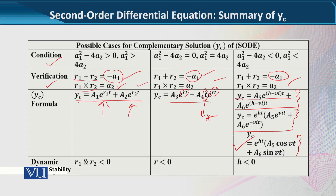Trigonometric form ہم نے اس لئے استعمال کیا تھا کیونکہ cosine اور sine zero اور one کے ساتھ مختصر values دے کر solution کو simplify کر دیتے ہیں. Dynamic stability کی بات ہے — یہاں صرف ان کا introduction ہے لیکن ہم آنے والی videos میں ان کو سمجھیں گے بھی. Distinct real roots کے لیے دونوں roots کا negative ہونا، equal real roots کے لیے root کا negative ہونا، اور complex roots کے case میں alpha کا negative ہونا dynamic stability کے لیے ضروری ہے.